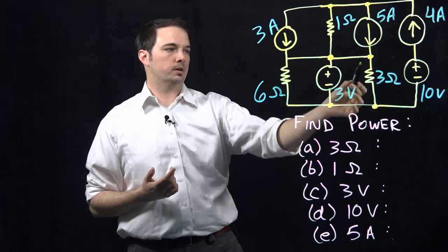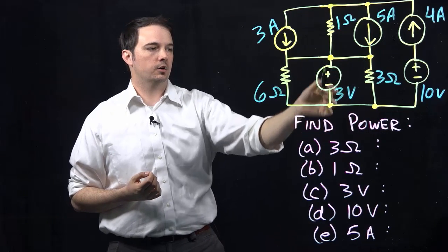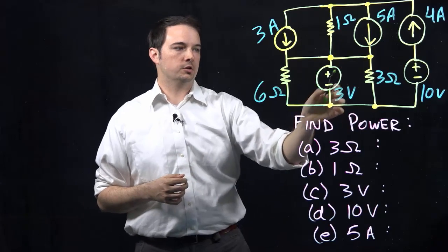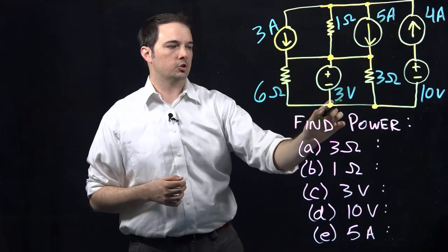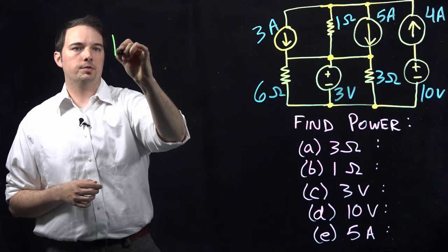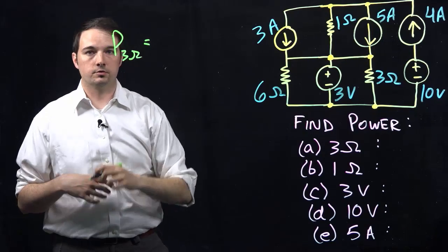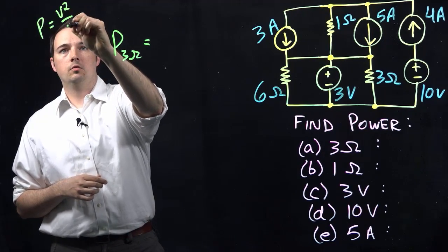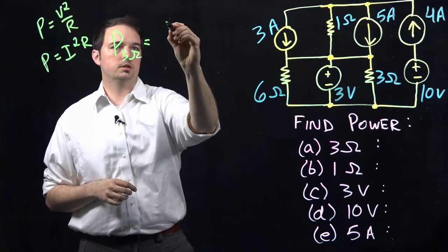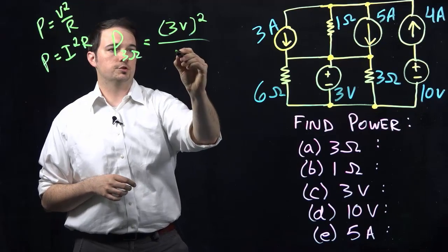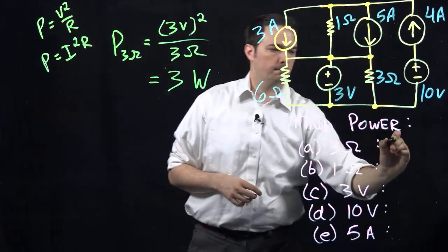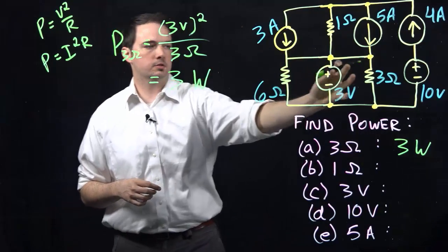But do I know the voltage? In this case I do, because the terminals of this resistor are directly shared with the voltage source here, which means they are in parallel — meaning the voltage across that 3 ohm resistor is equivalent to what's across this voltage source. So because I have the voltage indicated as 3 volts, I know that for part A, the power across my 3 ohm resistor can be found using V squared over R: 3 volts squared over 3 ohms, which gives us a power dissipated of 3 watts.